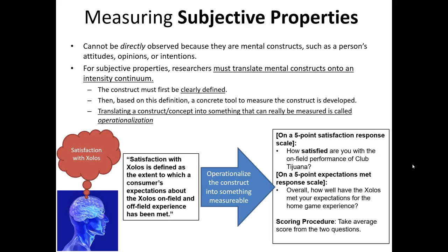In addition, look at our scoring procedure: take the average score from the two questions. Taking the average makes life easy, but it creates another assumption — we're assuming that satisfaction with the Xolos is equally driven by on-field performance and meeting expectations at the home game. Perhaps this isn't true. Perhaps on-field performance is the key driver and deserves additional weight. Even in this brief example, it becomes immediately apparent that measuring subjective properties can be rather tricky.